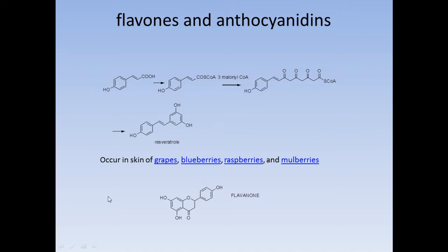Flavones are also important. A cinnamic ester is converted to a thioester with the reaction of coenzyme A, producing the ester of the acid. Then three ester condensations occur to give a polyketide-type molecule class, which then undergoes cyclization to give resveratrol products. Further reactions lead to flavonoid molecules. This is the shorthand path of the polyketide series to natural product synthesis.